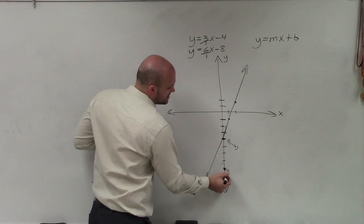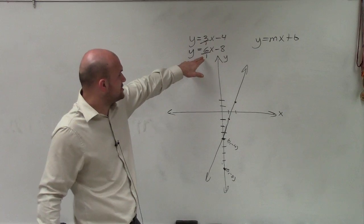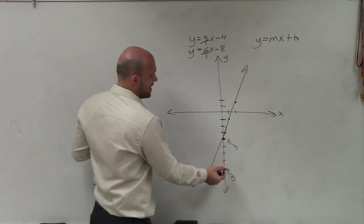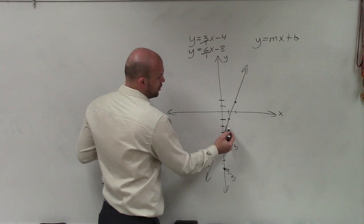But now this one, so that's at 0, negative 8. Now, this graph, or this equation, has a slope of 6 over 1. So now I'm going to go up 6 units. 1, 2, 3, 4, 5, 6 over 1.